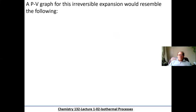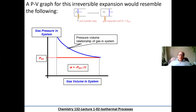Let's look at a PV graph for this irreversible expansion. This shows the original pressure P1 of the gas. As the gas expanded, the volume was increasing until P2. This is the external pressure opposing that expansion. We can calculate the work done by multiplying the external pressure by the change in volume from V1 to V2. The arrow denotes we're going from pressure state one to pressure state two — the pressure axis and the volume axis.